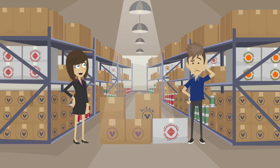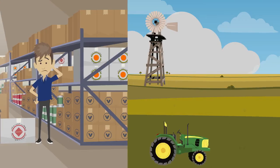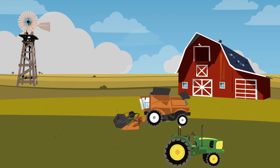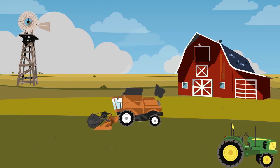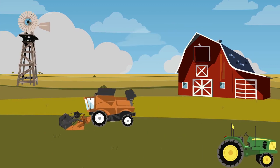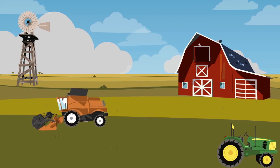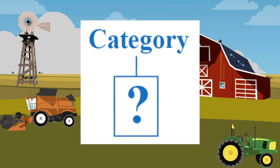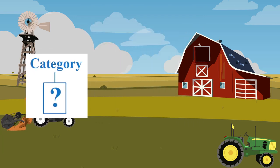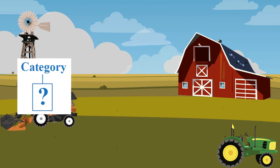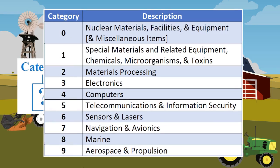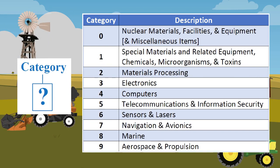Maybe it would be helpful if we walk through an example or two. I have a couple of diesel engines for farm equipment that I'd like to send to Mexico. The first step is to determine which of the ten categories you think the diesel engine would fall under.